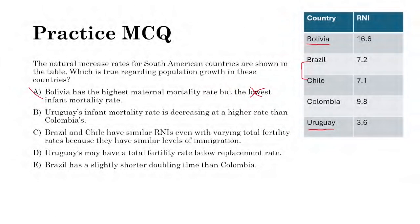Answer B — Uruguay's infant mortality rate is decreasing at a higher rate than Colombia's — is also probably wrong. Colombia has an RNI of 9.8 and Uruguay 3.6; Colombia has a higher population growth rate and thus higher infant mortality, meaning there's more room for decline. Less developed countries like Colombia typically see higher rates of IMR decrease.